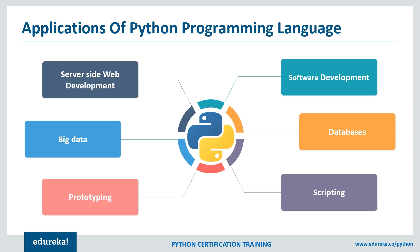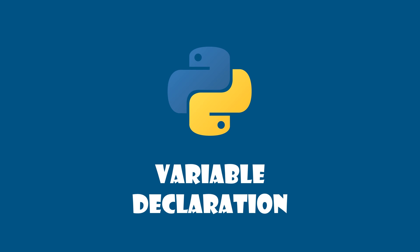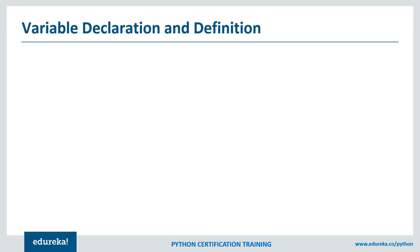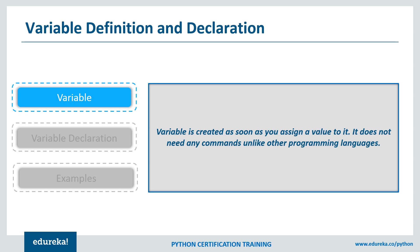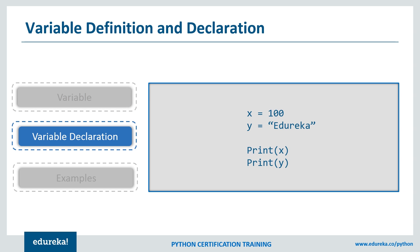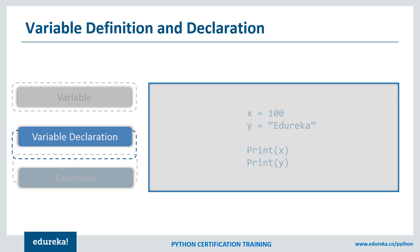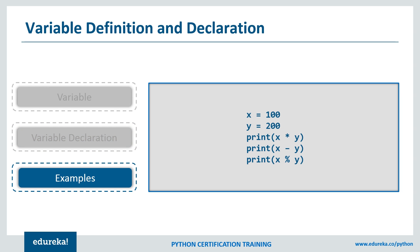Now let's move on to variable declaration. A variable is like a memory location where you store a value — you may or may not change it in the future. In Python, to declare a variable you just assign a value to it. You don't have to give any additional commands unlike C, C++, or Java. For example, we can assign 100 to X and 'edureka' to Y, then print them or perform arithmetic operations on them.